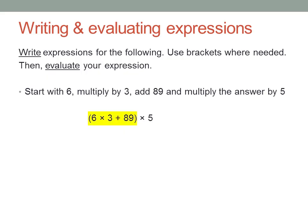Now evaluate. Brackets first. And inside the brackets, multiplication before addition. 6 times 3 is 18. 18 plus 89. That's 107. And 107 times 5 is 535.